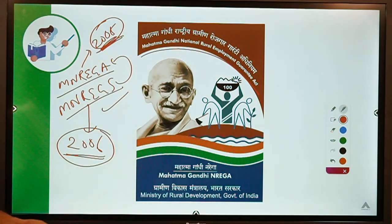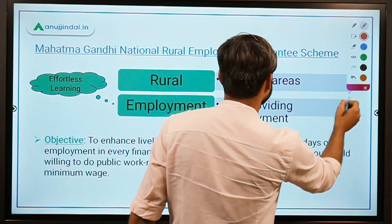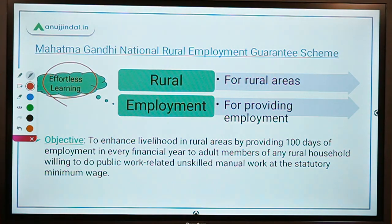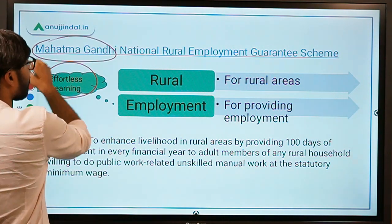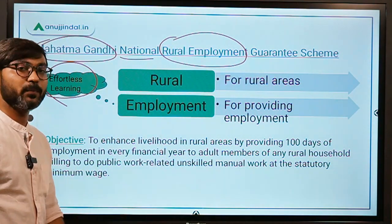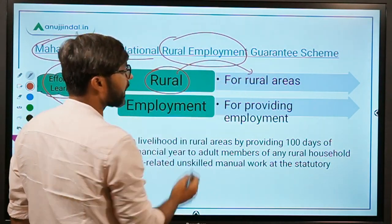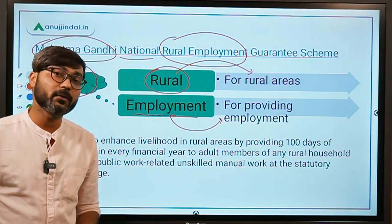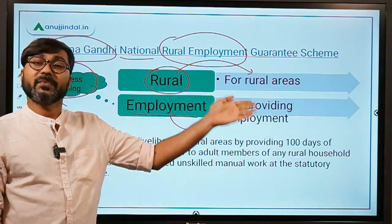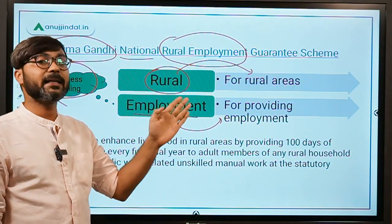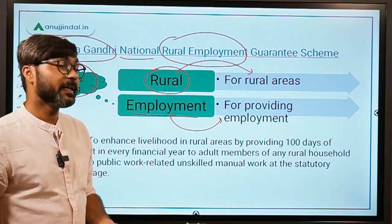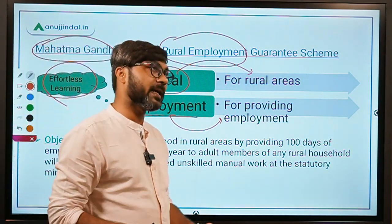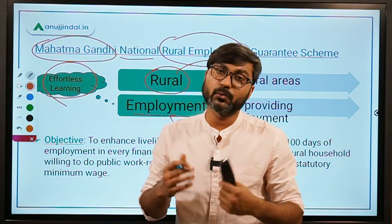Let us first try to simplify the objective of the scheme. In 'Mahatma Gandhi National Rural Employment Guarantee Scheme', there are two important words: 'rural' and 'employment'. Rural means this scheme is for rural areas, and employment means the scheme is for providing employment in the rural areas.